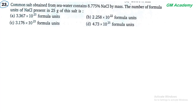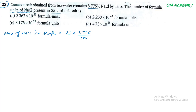Next question 23. Common salt obtained from sea water contains 8.775% NaCl by mass. The number of formula units of NaCl present in 25 gram salt निकालते हैं। Mass of NaCl in sample = 8.775% of 25 gram = 2.193 gram।